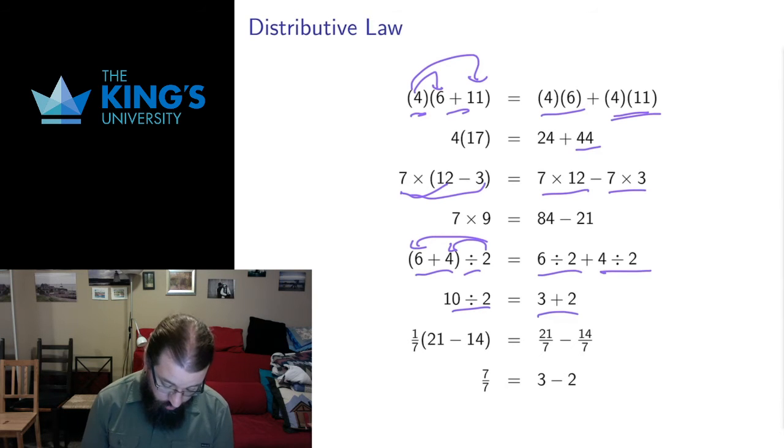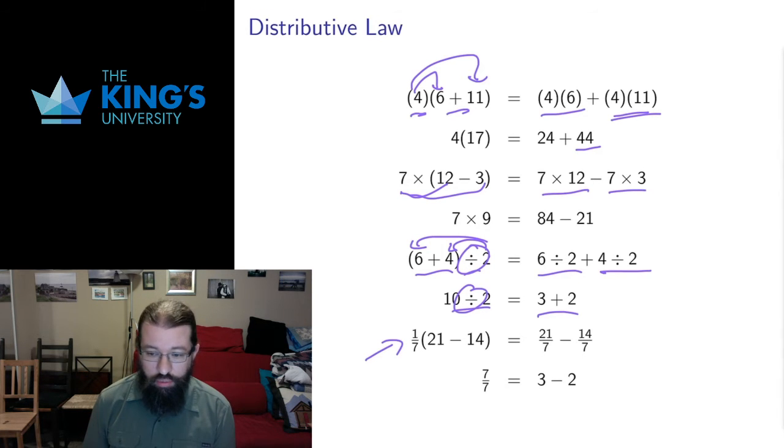We can write this in notation using the division symbol or we can write this in fraction notation as I talked about in the previous slide. And here we distribute again. This 1/7 distributes as division by 7 over 21 minus 14. And that works out to 1 on both sides.